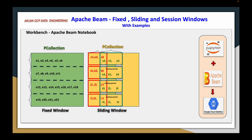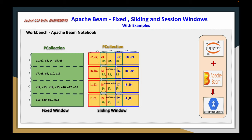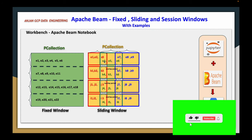This window duration is 5 minutes and my next window starts exactly at 2 and a half minutes. In the same way, my third window also starts at exactly 2 and a half minutes duration. That means all these windows are overlapped — the second window is overlapped with the first window, and the third window is overlapped with the second window. That overlap duration is 2 and a half minutes, and the entire window duration is 5 minutes.